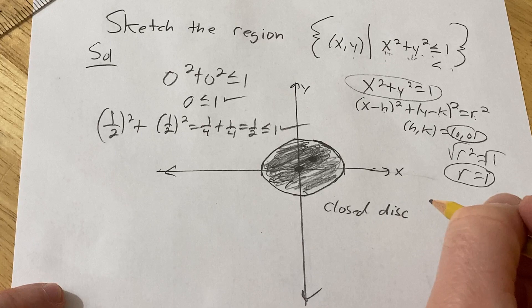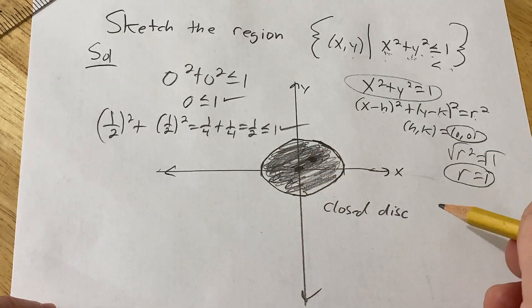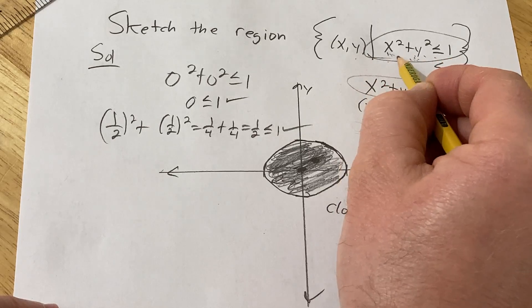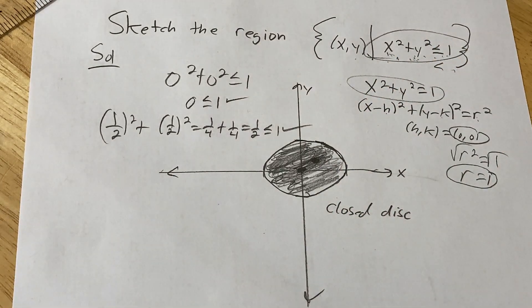So kind of an interesting example. And this comes up later in other areas of math, but that is everything, including the circle and everything inside the circle of radius 1. Good luck.